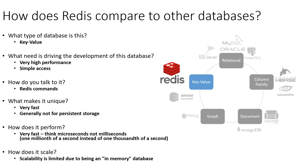Part of the reason Redis is so fast is that we typically configure it as strictly an in-memory database, meaning it never writes anything to the hard disk — everything is stored in RAM. RAM is thousands of times faster than a hard disk or even a solid-state disk. However, the downside is that when your computer turns off or crashes, everything in memory disappears.